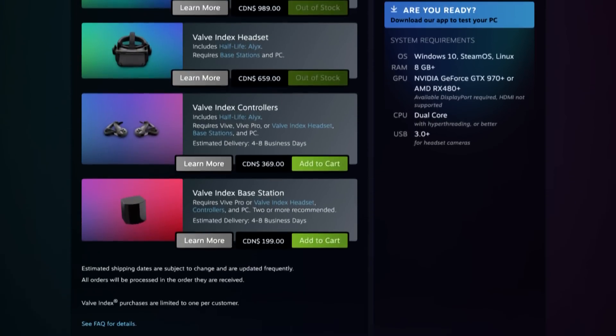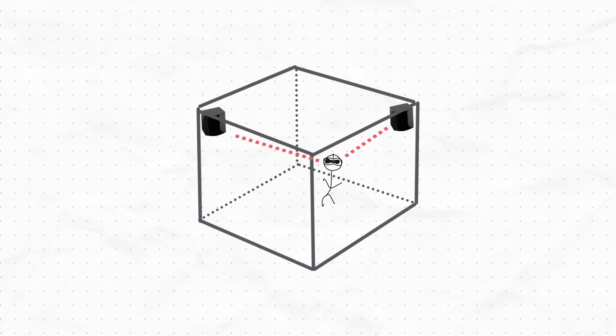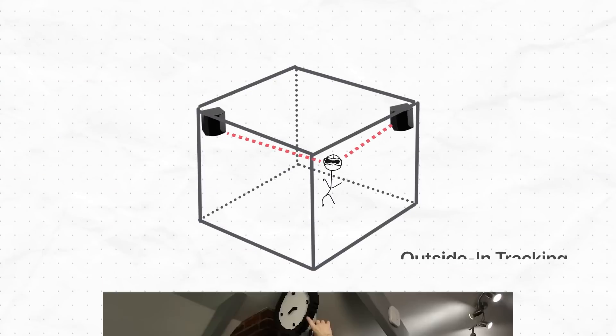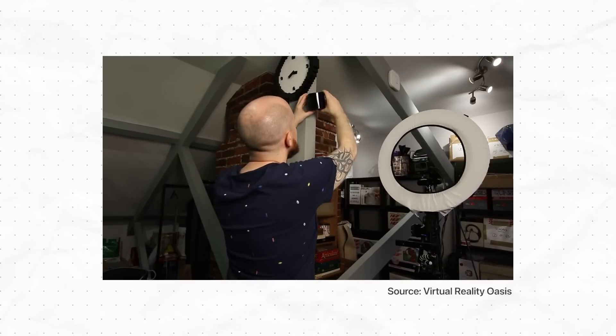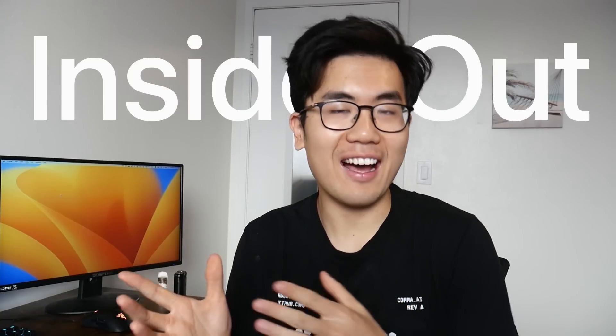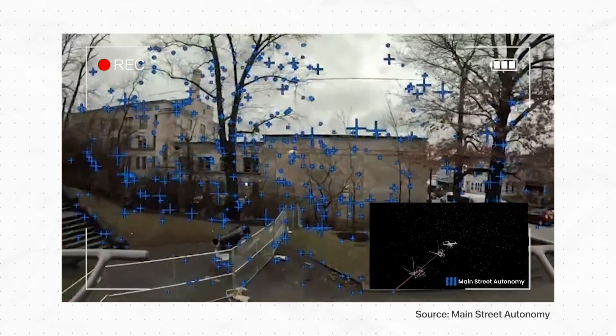Lots of older VR headsets like the Valve Index came with base stations, which you'd install in your room and which communicate with the headset through infrared signals — that's called outside-in tracking. It's not commonly used nowadays because it's very tedious to set up and you'd only be able to use it in your room. The more common approach we're going to try to implement is called inside-out tracking: install fixed cameras on the headset and, by looking at the video feeds, infer how it's moving relative to the outside world.